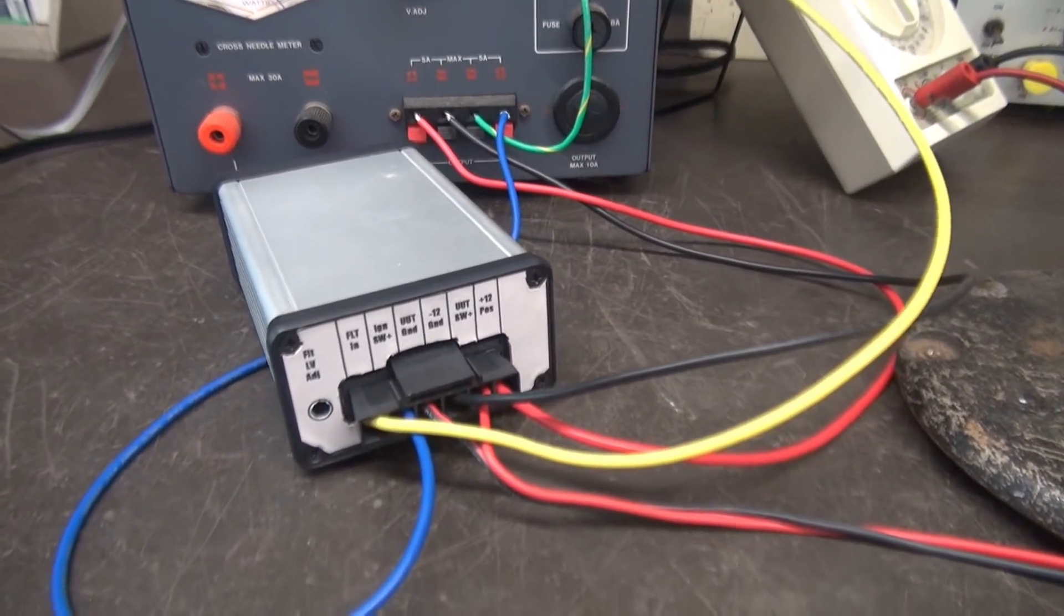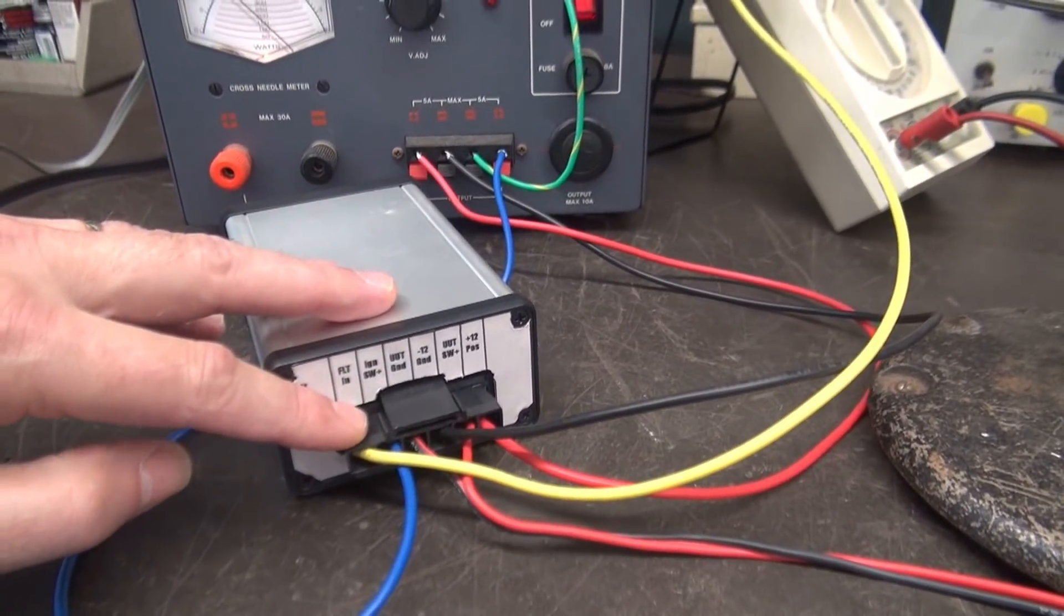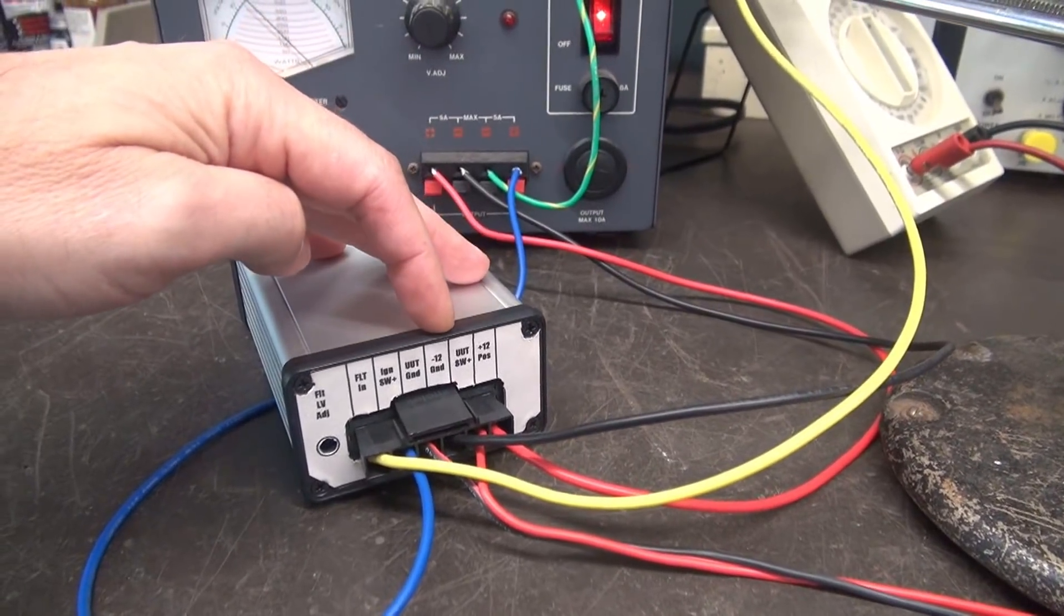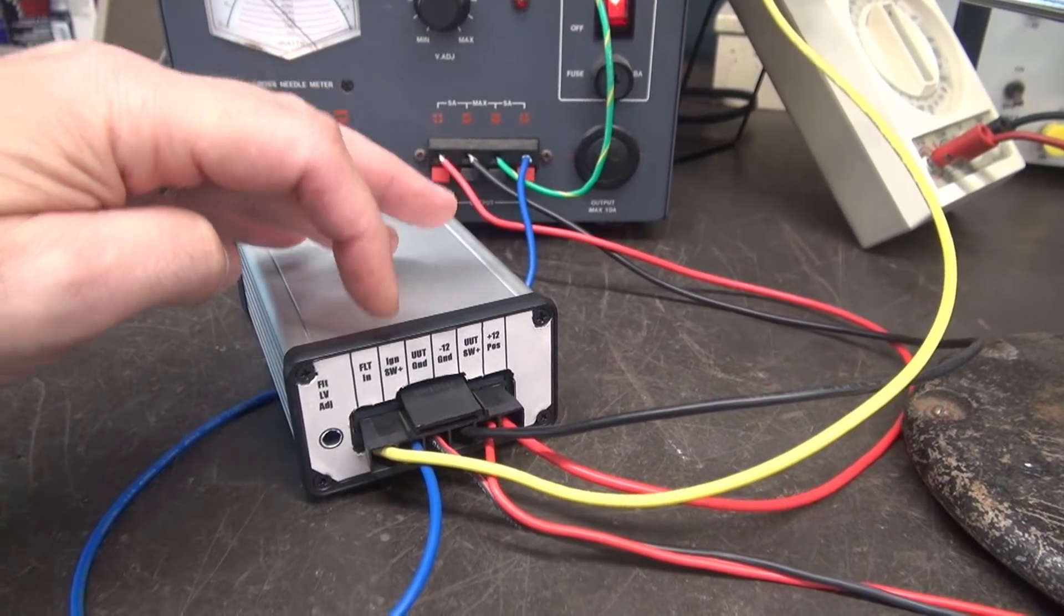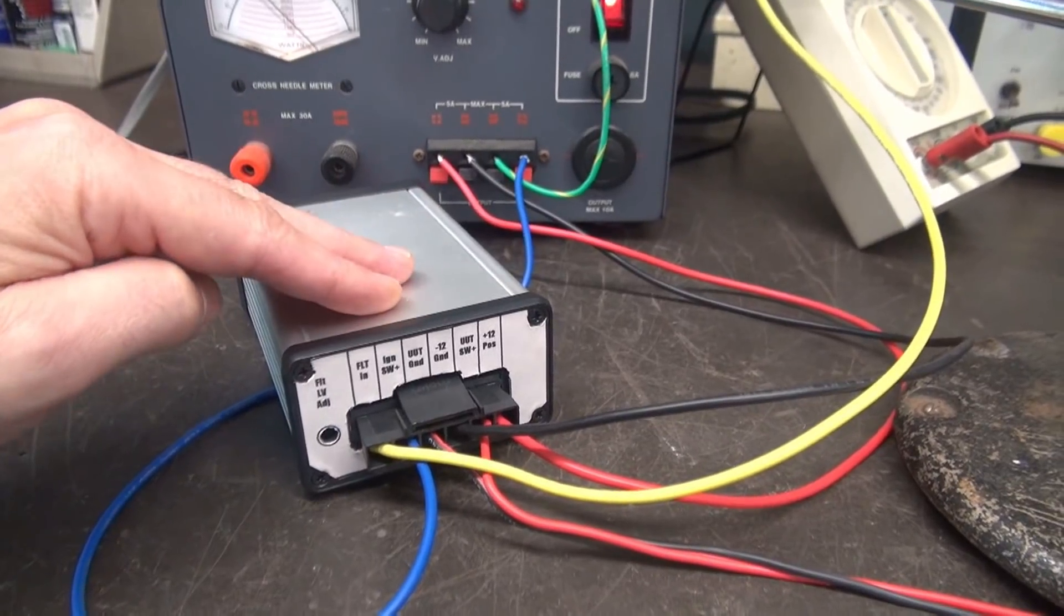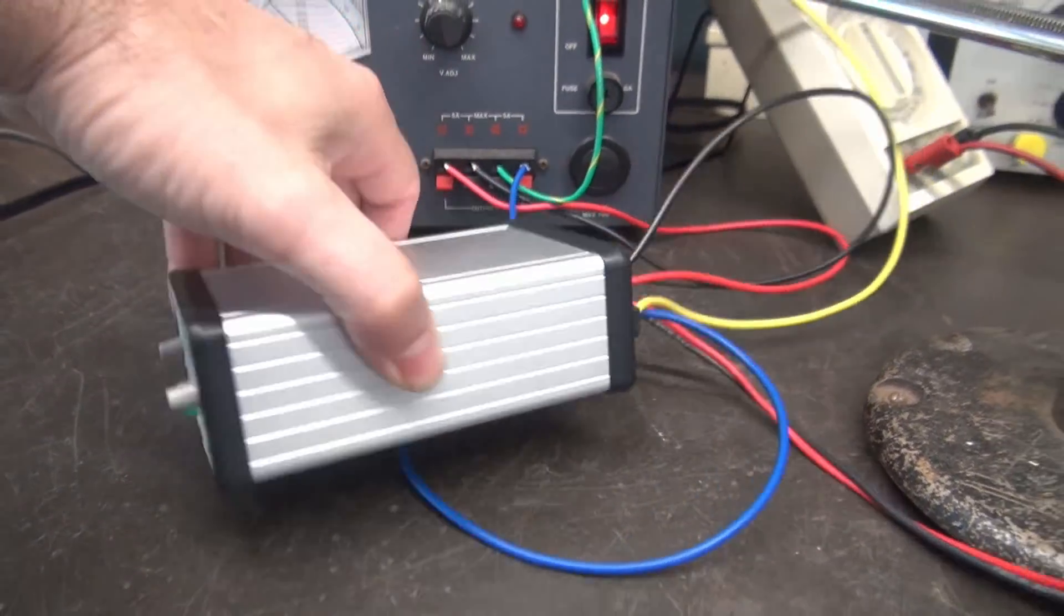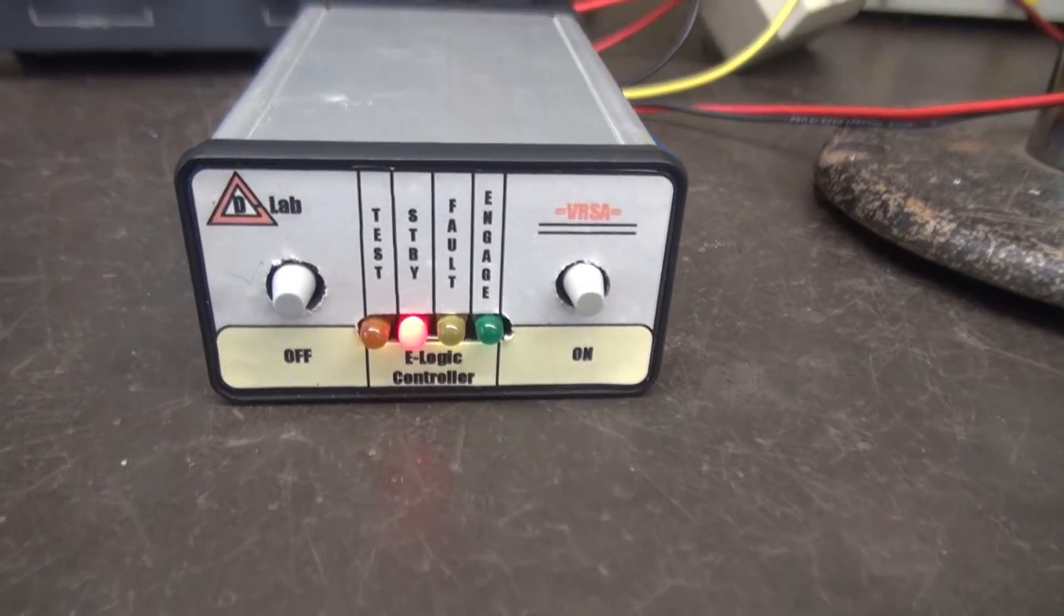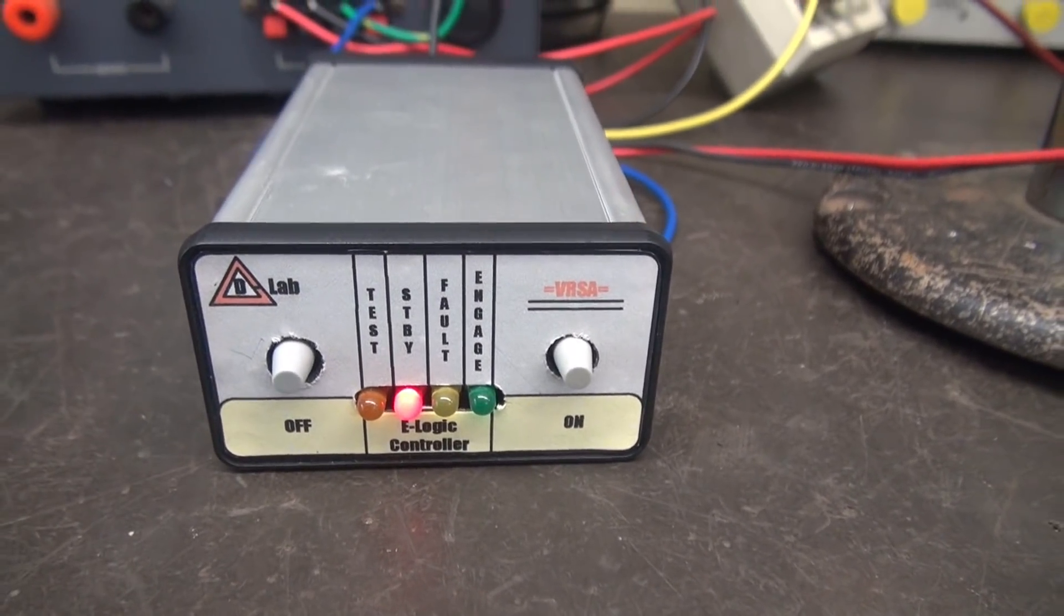Demonstration time of the Versa unit. I've plugged in the rear Molex connector, so we have 12 volts coming in. We have the output going to our load. There is a switched power input to enable the device and my fault input. You can see at this point, the Versa module is in standby mode.